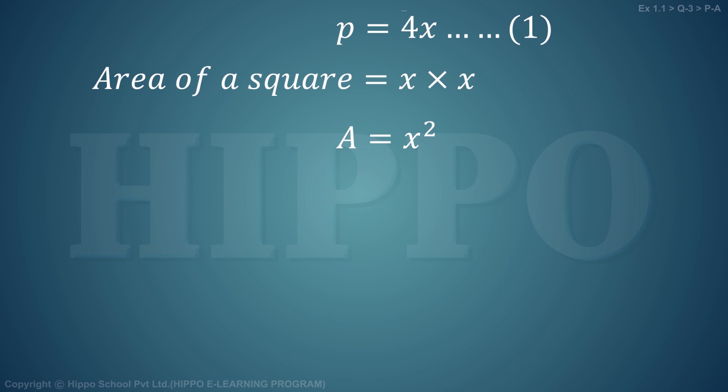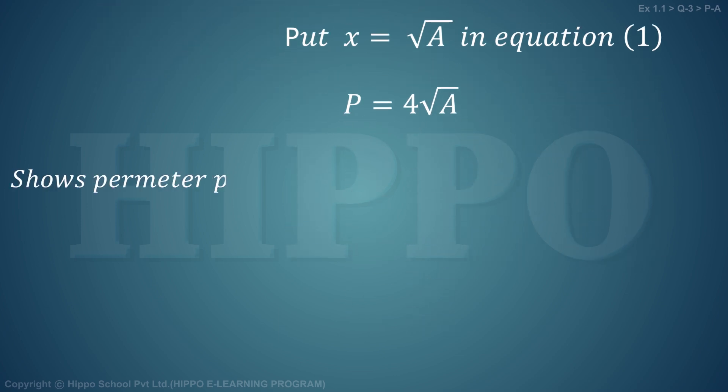Put x = √A in equation number one, so p = 4√A. This shows perimeter p of a square as a function of its area.